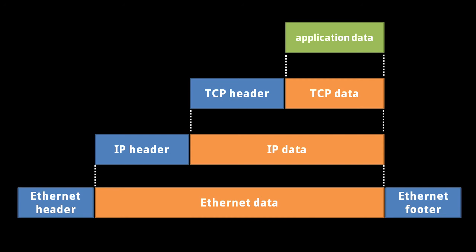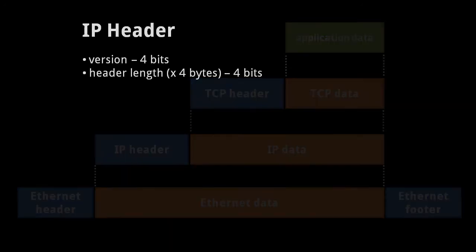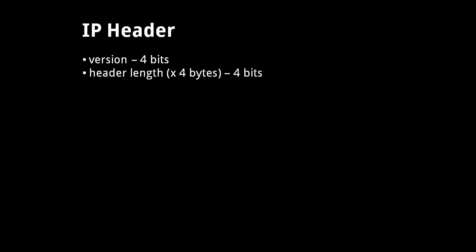Now let's look at IP, UDP, and TCP in detail, starting with IP. Looking at the header of an IP packet, we have first the version of Internet Protocol specified as 4 bits, and then the length of the header in bytes specified as 4 bits. This length value is multiplied by 4, and an IP header is at least 20 bytes, so the header length value will always be 5 or greater.